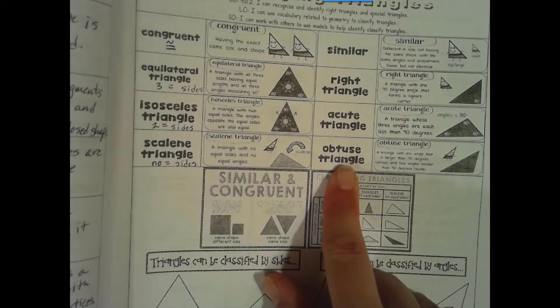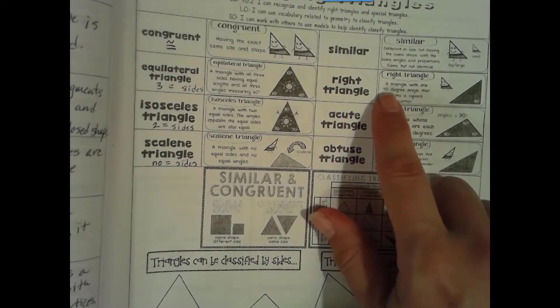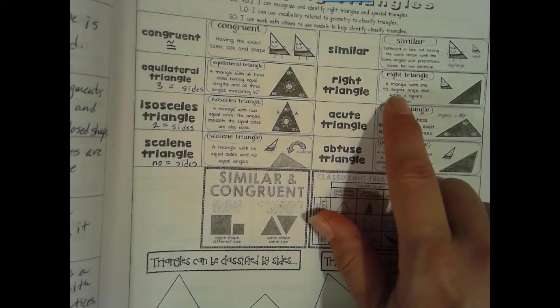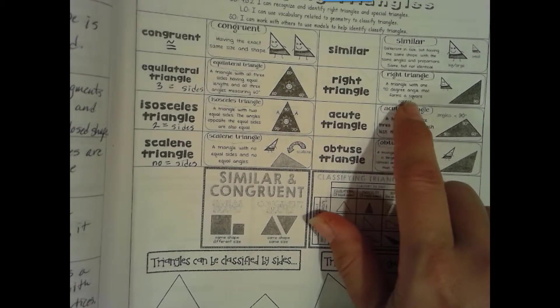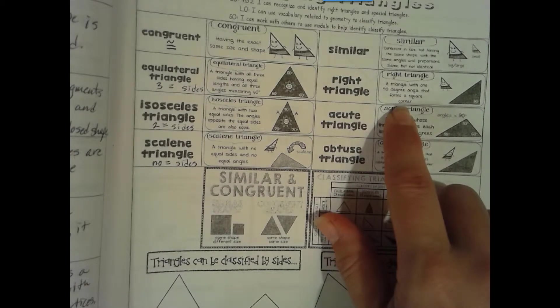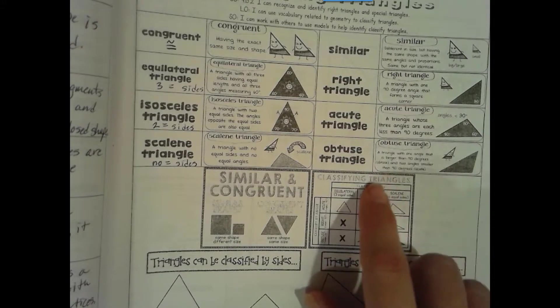These have to do with angles. Right triangle: a triangle with one 90 degree angle that forms a square corner. So we only need one right angle for this.